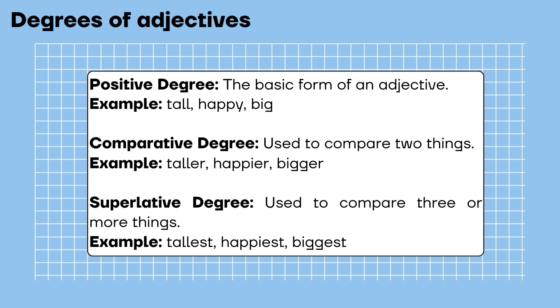Comparative degree: used to compare two things. Example: taller, happier, bigger. Superlative degree: used to compare three or more things. Example: tallest, happiest, biggest.